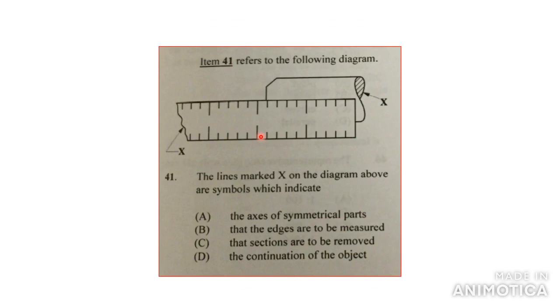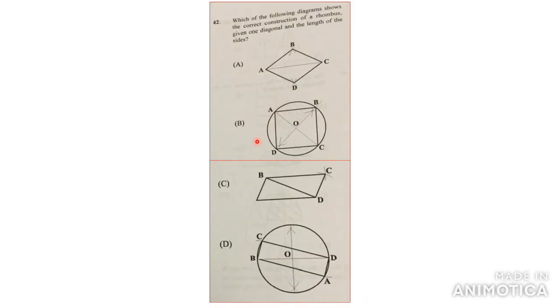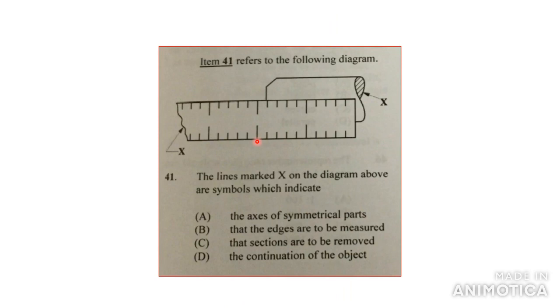Alright, the lines map X on the diagram above, symbols which indicate, and this indicates that sections are removed from the object. So it's not completed. The answer would be Z.